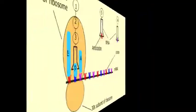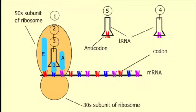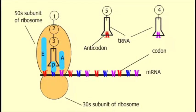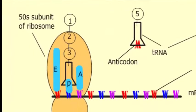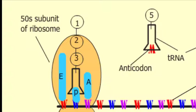Bacterial protein synthesis as sites of action of several antibiotics. Before we start, let's see the elements involved in protein synthesis. We can see a 70S bacterial ribosome composed of a 30S subunit and a 50S subunit, having three binding sites for transfer RNA or tRNA molecules: the aminoacyl (A), peptidyl (P), and exit (E) sites.